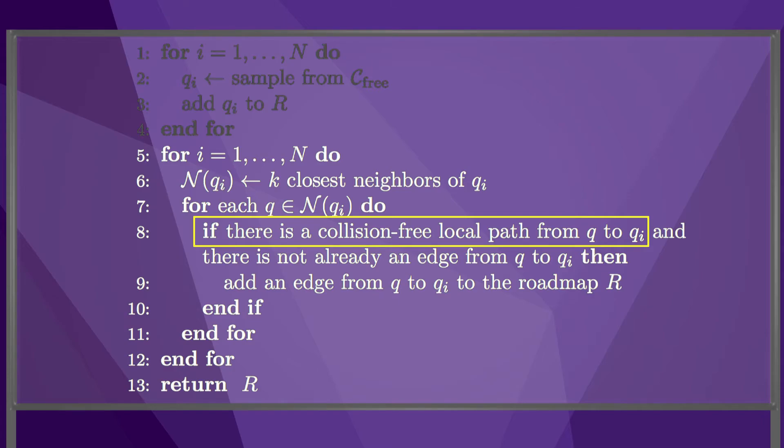At the end of this second phase of the PRM construction algorithm, we should have a graph that should approximately represent the free space, depending on our choice of the number of samples n, the number of neighbors k, the sampling algorithm, and the local path planner. The choice of the sampling algorithm and the local path planner provides a lot of flexibility to customize the basic algorithm.